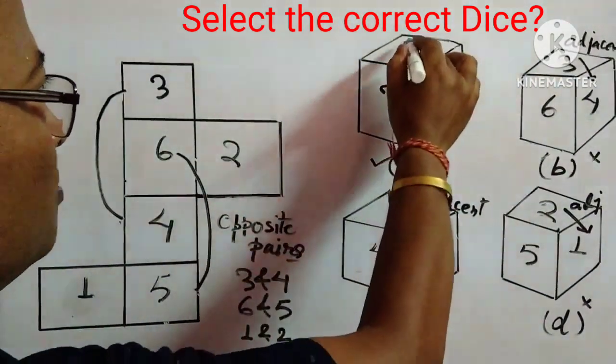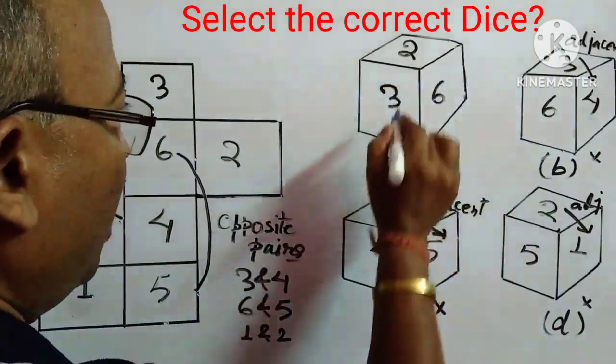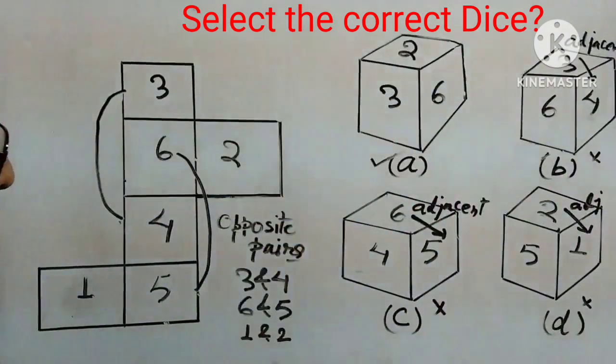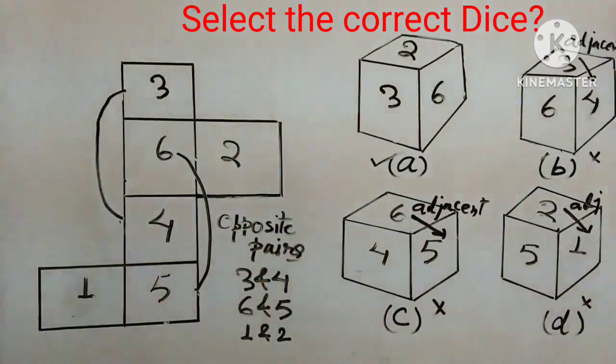1 and 2, we are observing 2, we are not observing 1, so definitely 1 is at this bottom, so this one is the answer, so this is the way we select this type of question.